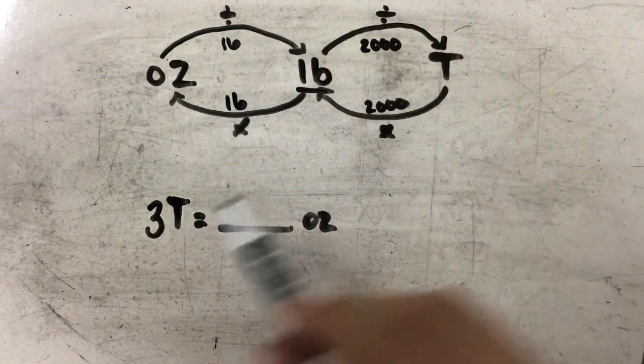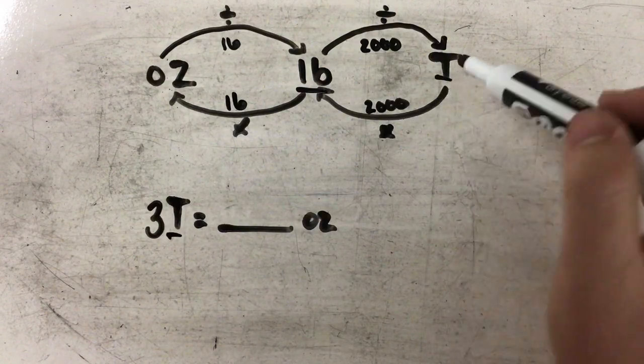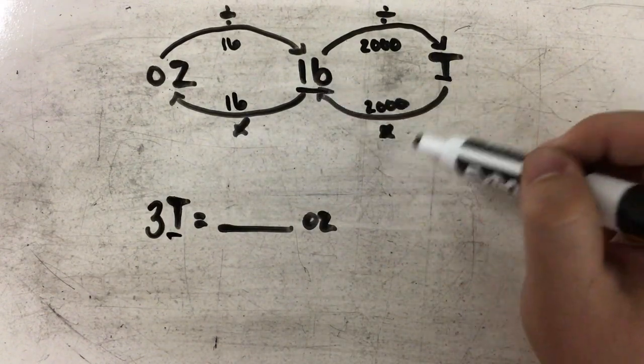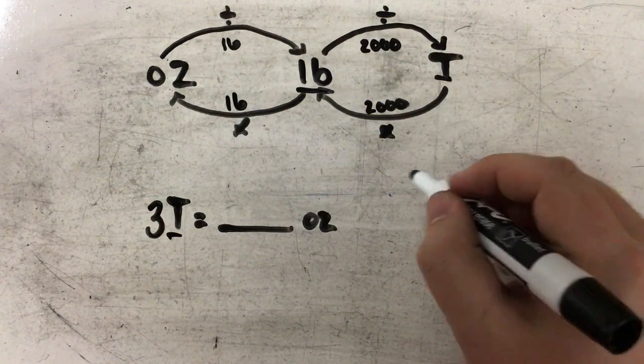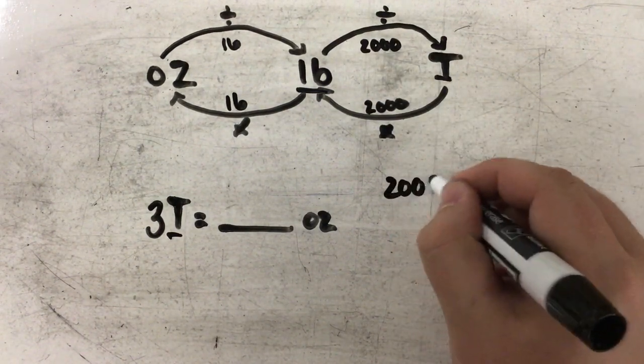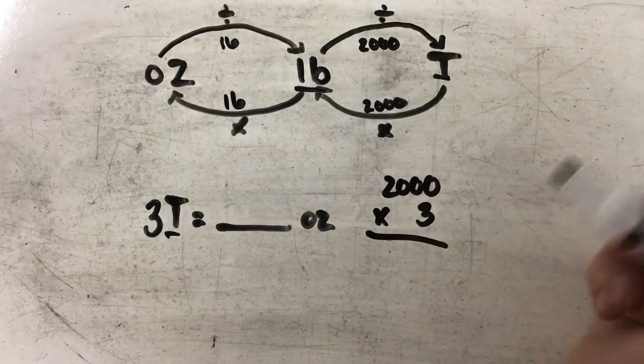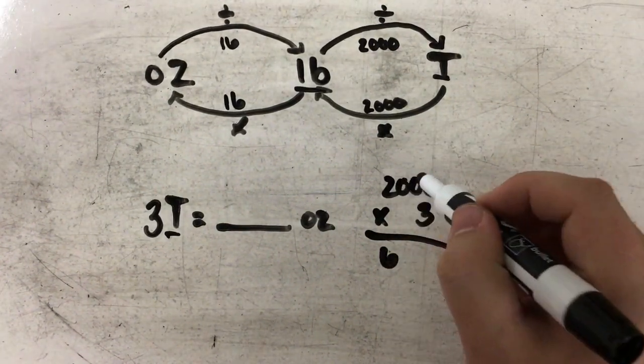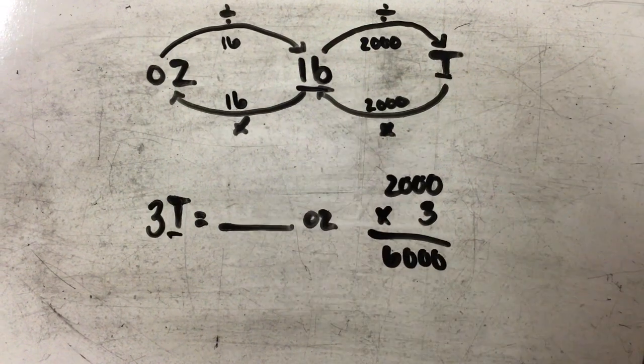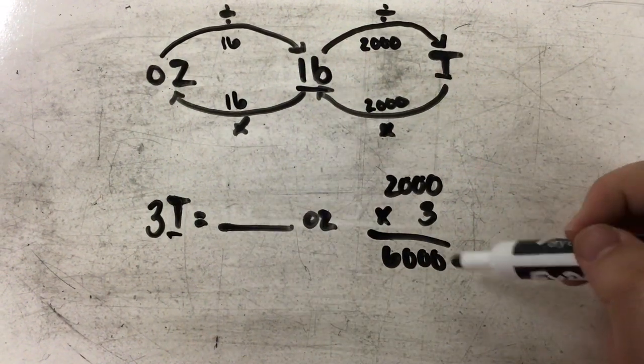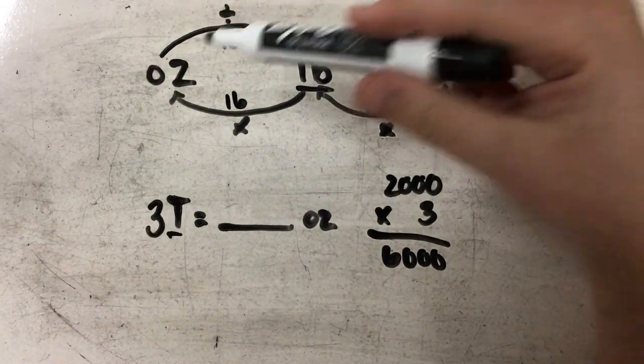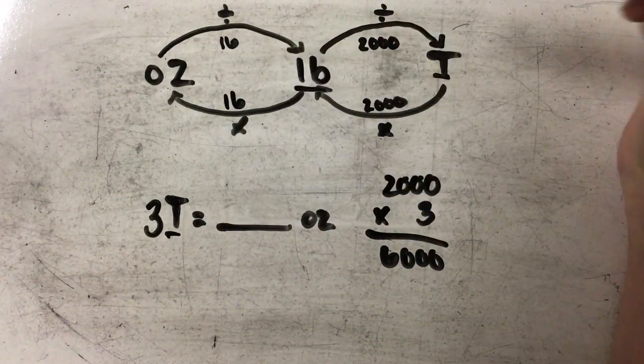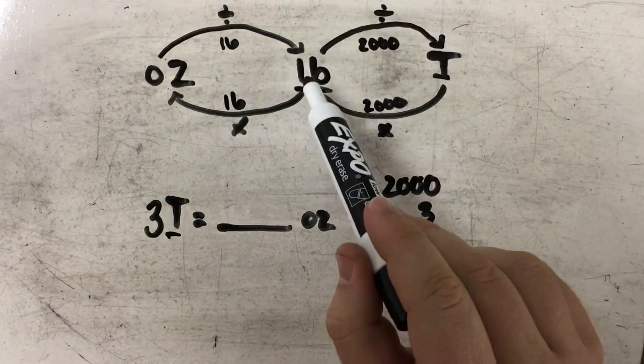So I'm going to start with tons. And going from tons to pounds, I see that I need to multiply by 2,000. So 2,000 times 3, and that's really just 2 times 3, which is 6 with one, two, three zeros on the end. So that number, 6,000, doesn't tell me how many ounces I have, but it tells me how many pounds there are in 3 tons. So now that I have my pounds, I need to continue on in my map to get to ounces.